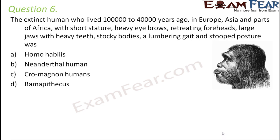Question number 6. The extinct human who lived 100,000 to 40,000 years ago in Europe, Asia and large parts of Africa — with short stature, heavy eyebrows, retreating foreheads, large jaws with heavy teeth, stocky bodies, a lumbering gait and stooped posture — which phase of human evolution was this? Just looking at these features, you will have to decide. Yes, this was the Neanderthal human.